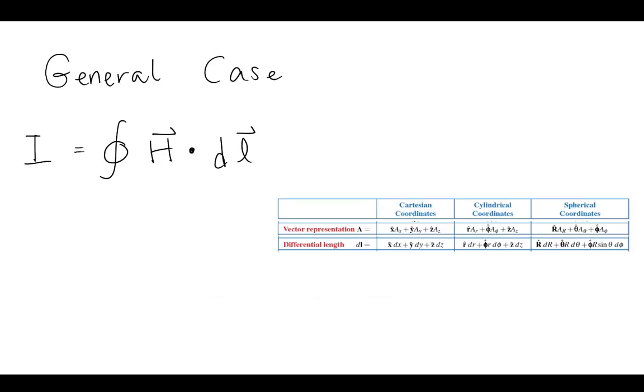So in the general case of an Amperian path, we're going to have this integral where we have the source, current I on the left-hand side, and then this path integral with the field H on the right-hand side. And we're taking the field H and we're dotting it with some dl as we go around some closed-loop path.